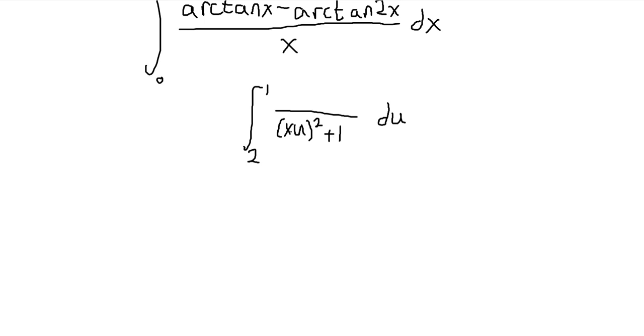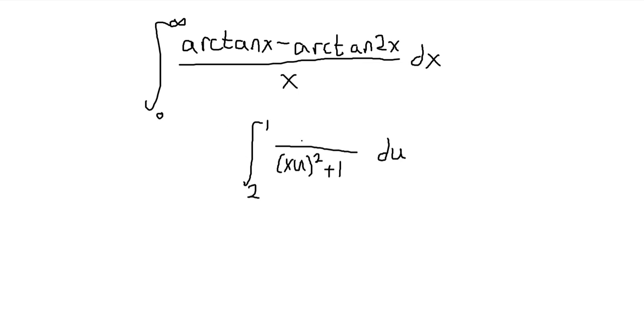and then in order to get it in the form that I want, I have to multiply x on the top. So if I did like a t equals x times u sort of substitution, x is sort of like a constant in this u integral. So if I substituted and then integrated, I would get this exact expression, so the arctan x minus arctan 2x.